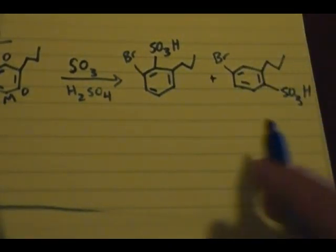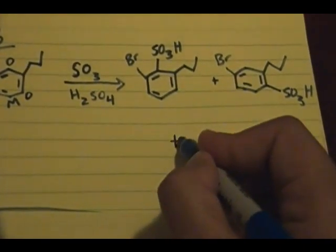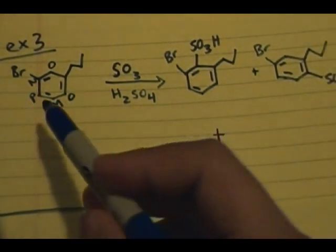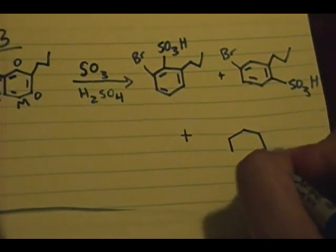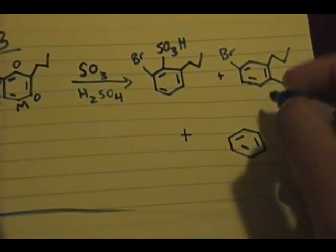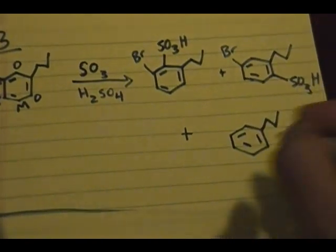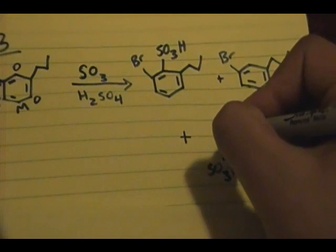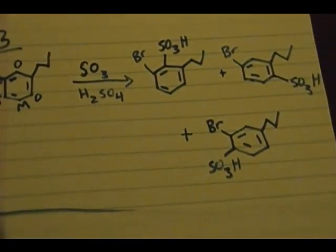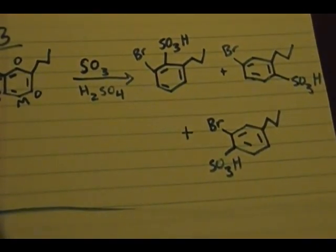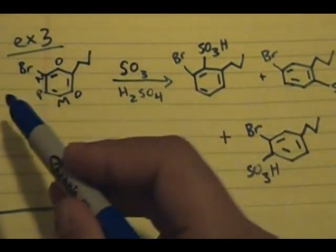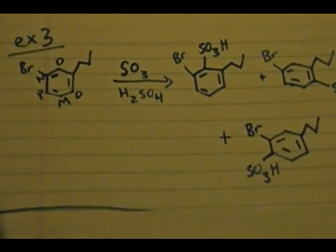And then the third and final product you form from this reaction is where you have the SO3H group in the para position, so it looks like this. SO3H, your bromine right there. And there you have it, these are the three products you form from this sulfonation reaction with these substituents on the aromatic ring.